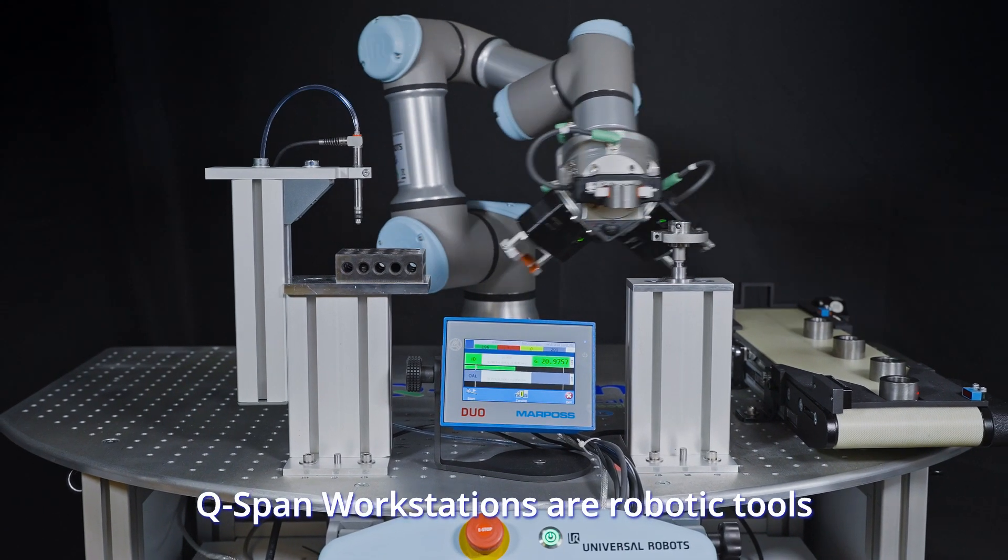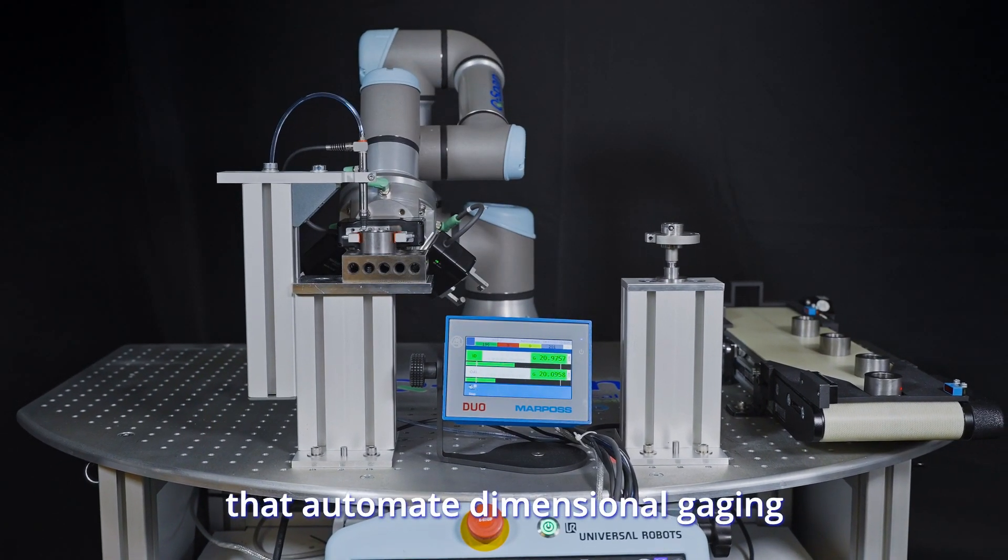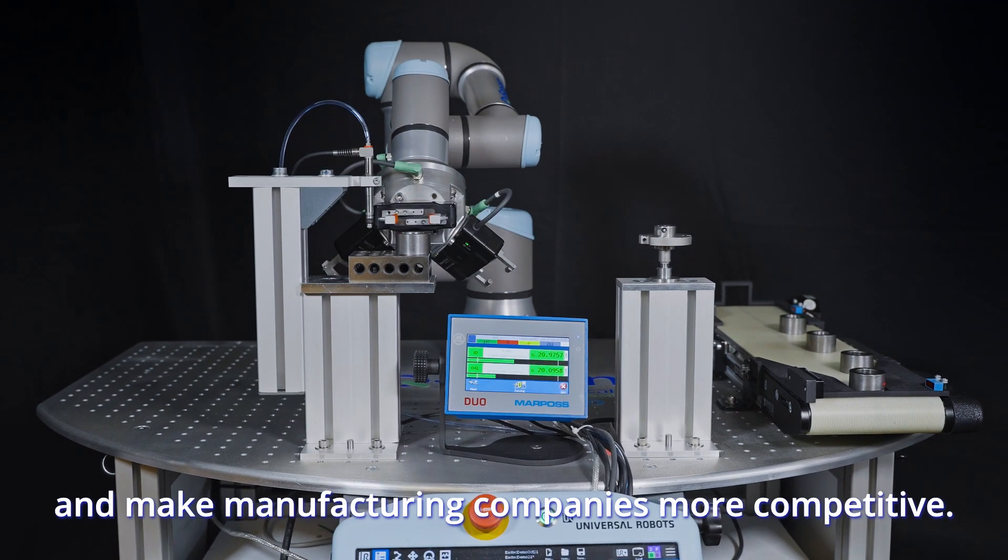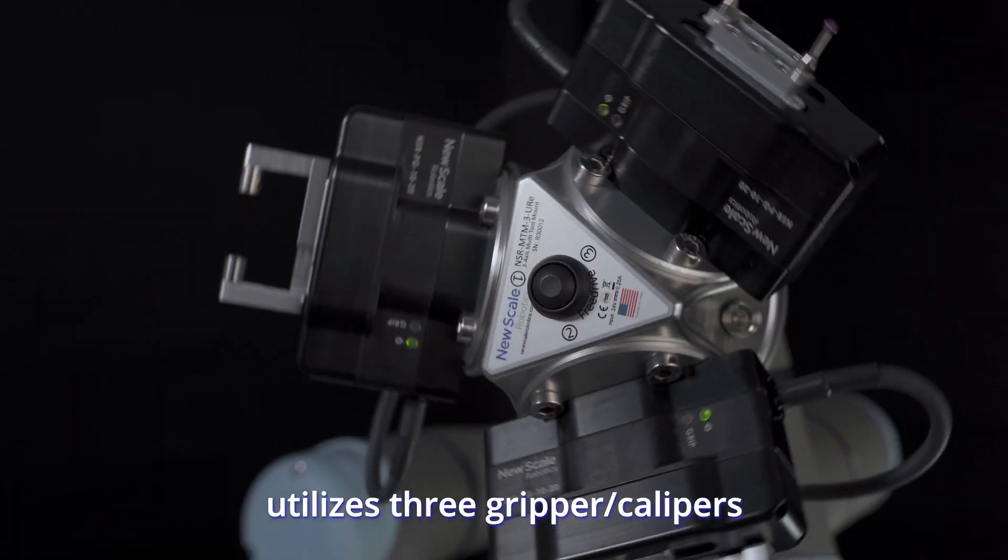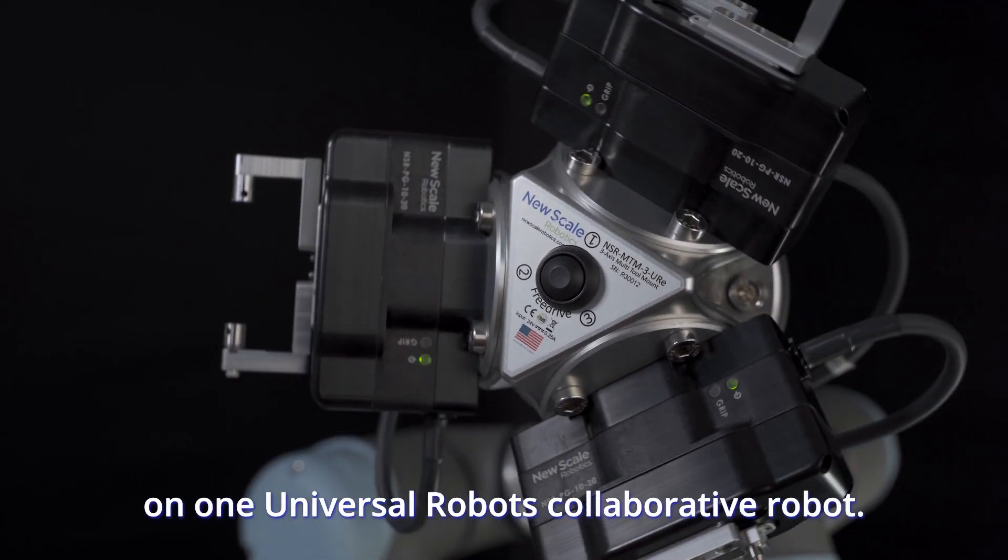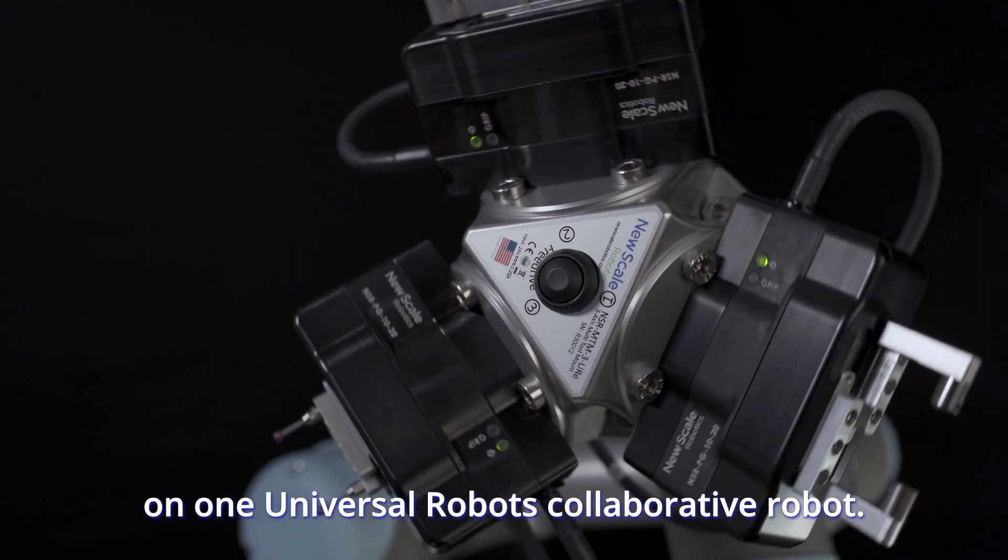QSPAN workstations are robotic tools that automate dimensional gauging and make manufacturing companies more competitive. A standard QSPAN workstation utilizes three gripper calipers on one Universal Robots collaborative robot.